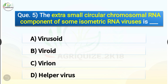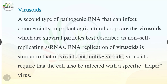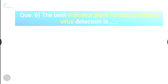Question number five: The extra small circular chromosomal RNA component of some isometric RNA viruses is dash. The options are virusoid, viroid, virion, or helper virus. The correct answer is option A, virusoid. Virusoids are a second type of pathogenic RNA that can infect commercially important agricultural crops. They are subviral particles best described as non-self-replicating single-stranded RNAs.